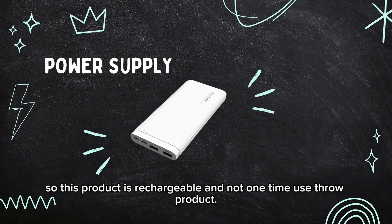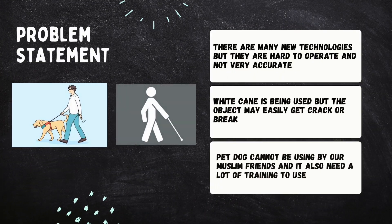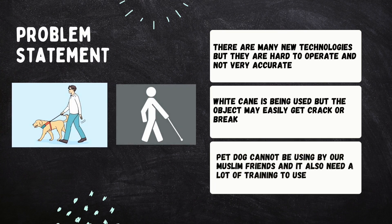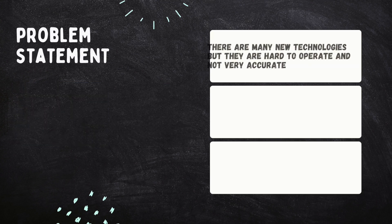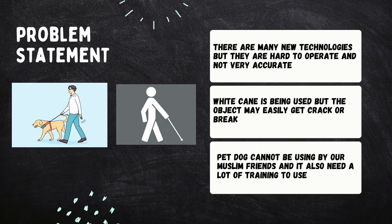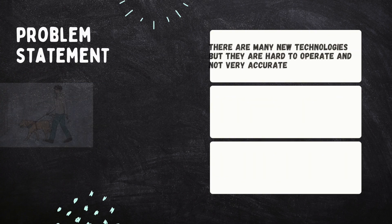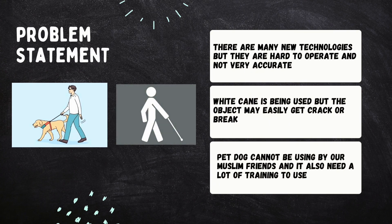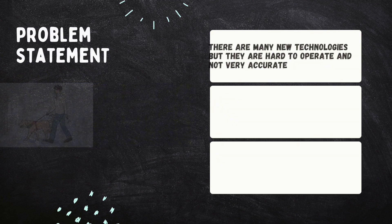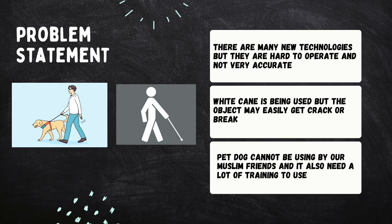Here are some current problems and reasons why this product was made. Firstly, there are many new technologies but they are hard to operate and not very accurate. Secondly, white canes are being used but the object may easily crack or break. Additionally, pet dogs cannot be used by Muslim users and also require a lot of training.